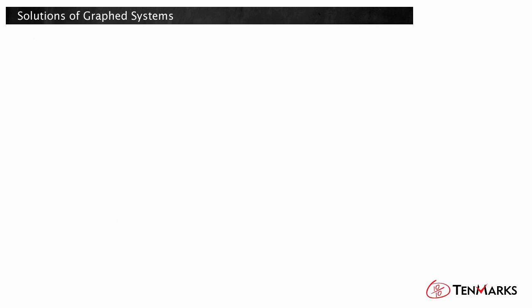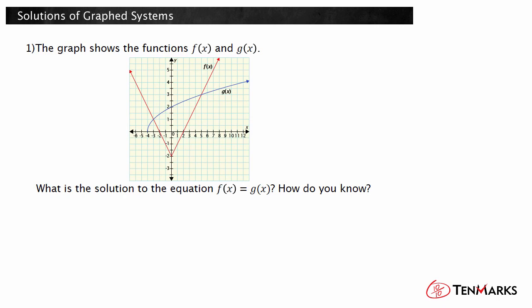Let's look at an example. The graph shows the functions f of x and g of x. What is the solution to the equation f of x equals g of x? How do you know? The question is asking for the x value at which f of x equals g of x, so you are looking for the x values that make the function outputs the same for both functions. This will occur where the graphs intersect.